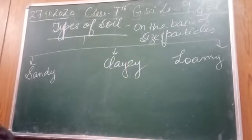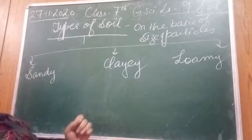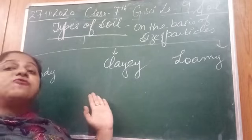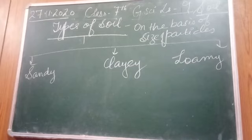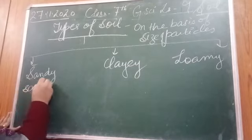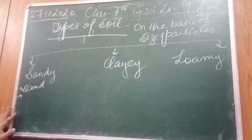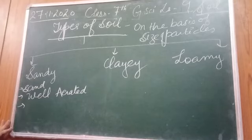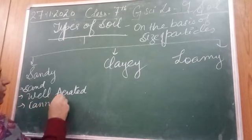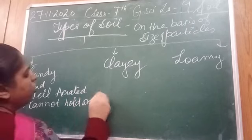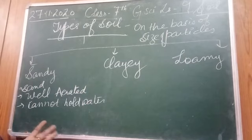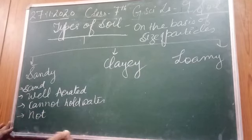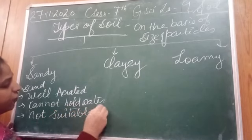All three types have different characteristics. Sandy soil contains a large amount of sand, as is clear from the name. The sand particles are very large, so it is well aerated — air can pass through it properly. Because there are large spaces between the particles, it cannot hold water — water drains out. So it is not suitable for growing crops.